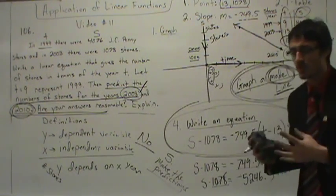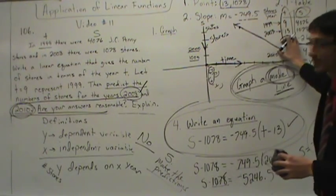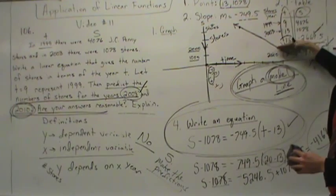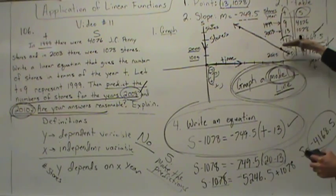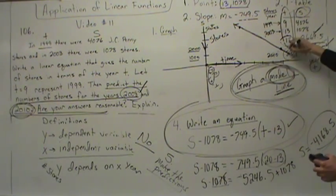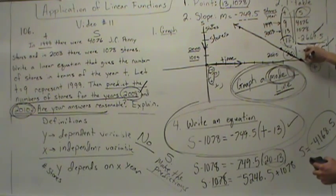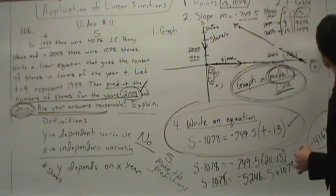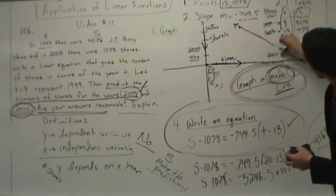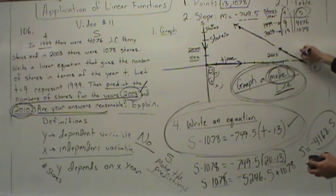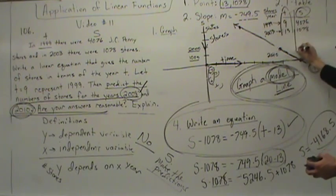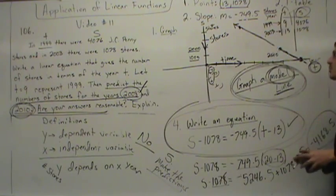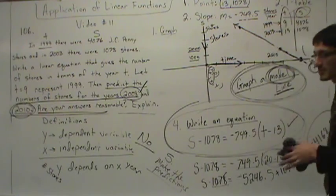When will we have zero stores? When will the number of stores reach zero? If we extend this line outward, the stores will reach zero when we are located on the T axis. The line is intersecting the T axis somewhere. We're predicting when the number of stores reach zero. This would be an x-intercept — and what do we know about x-intercepts? Their y-values are zero.